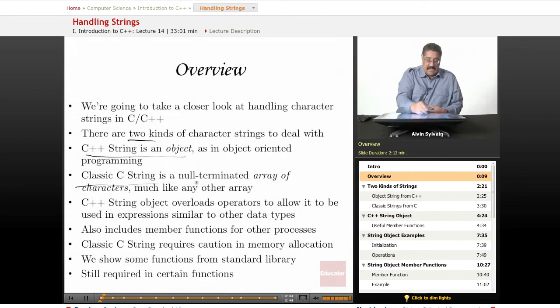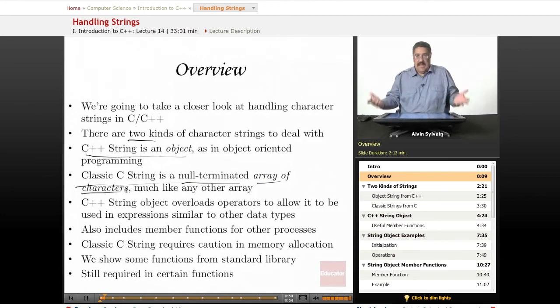Then there's the classic C string, which has been around ever since C was invented, which is a null-terminated array of characters. And it's just like any other kind of array. It's just a special array that gets treated like a character string.